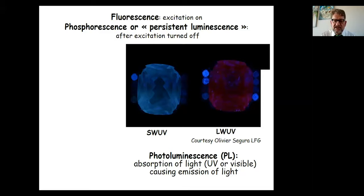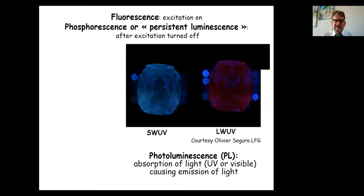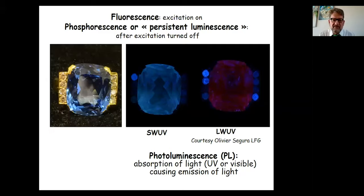What we mostly do in gemology is photoluminescence (PL) — exciting luminescence with photons, UV or visible, and getting emission in the visible range. As a quiz example: mounted gemstones fluorescing blue in shortwave and red in longwave might seem like a heat-treated ruby, but they are actually flame fusion synthetic stones, an imitation of aquamarine. This illustrates how luminescence can immediately help identify a material.